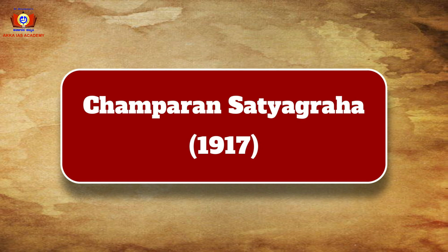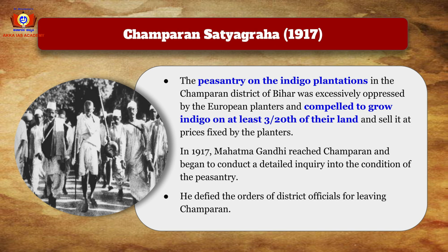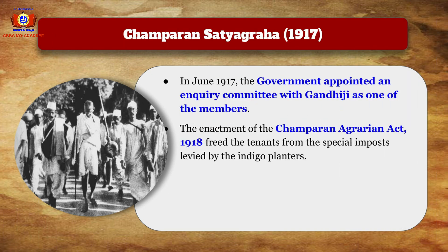After Gandhi's arrival in India in 1915, a powerful movement was seen in Champaran in 1917. The peasantry on indigo plantations in Champaran district of Bihar was excessively oppressed by European planters and compelled to grow indigo on at least 3/20th part of their land, selling it at prices fixed by the planters. Gandhi reached Champaran in 1917, conducted a detailed inquiry into peasant conditions, and defied orders to leave. In June 1917, the government appointed an inquiry committee with Gandhiji as a member, and the Champaran Agrarian Act of 1918 freed tenants from special levies imposed by indigo planters.